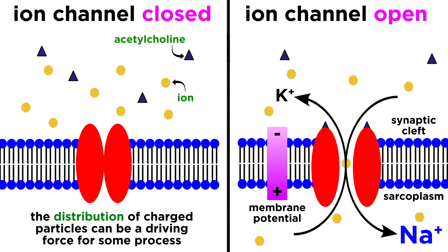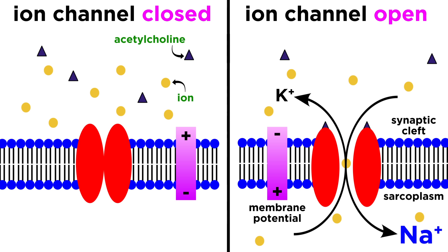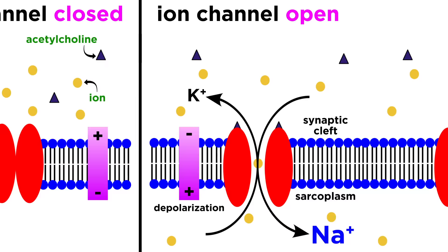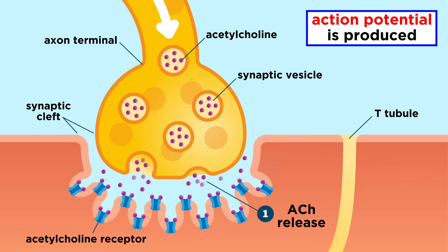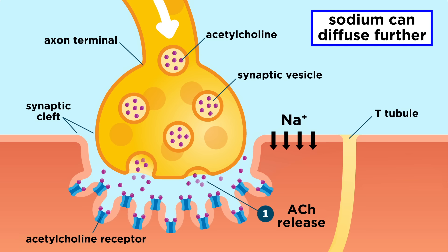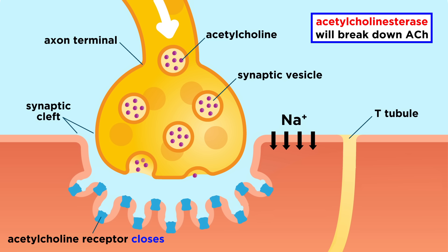Prior to the opening of the ion channels, the inside of the cell was more negatively charged than the outside, but as sodium ions enter, depolarization will occur. This causes other nearby sodium channels to open, and more sodium ions will enter, following the electrochemical gradient. Once a particular threshold voltage is reached, this will generate an action potential. Sodium can now diffuse into the cell anywhere along the membrane. While this is happening, an enzyme in the synaptic cleft, called acetylcholinesterase, will break down acetylcholine, and the ion channel closes, preventing further muscle contraction until another nerve impulse arrives.